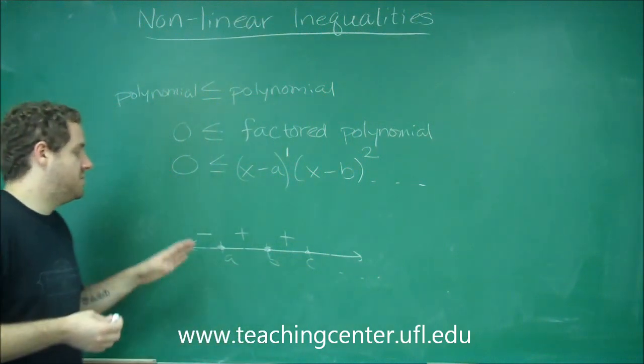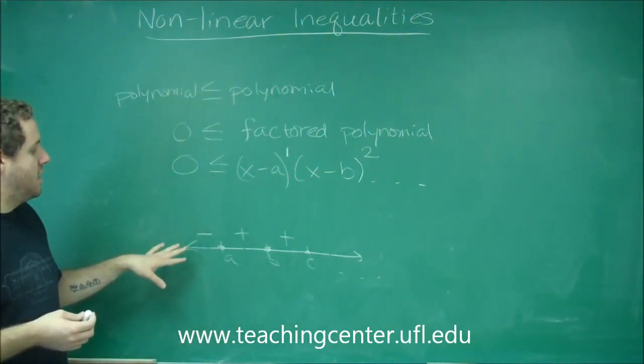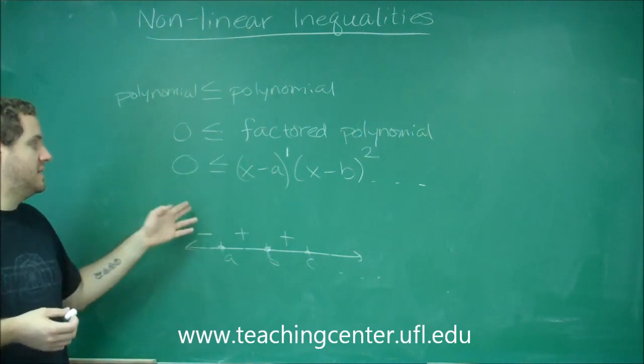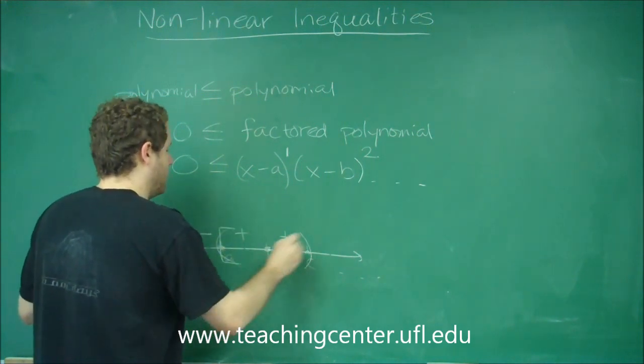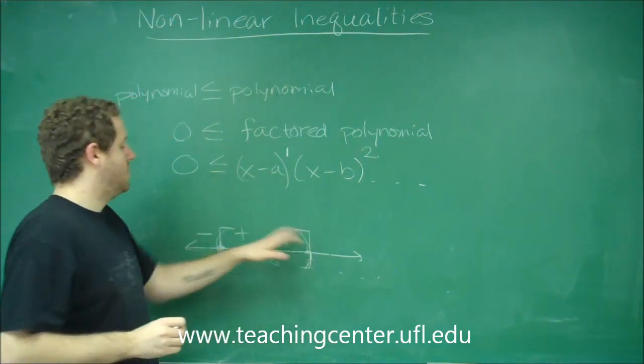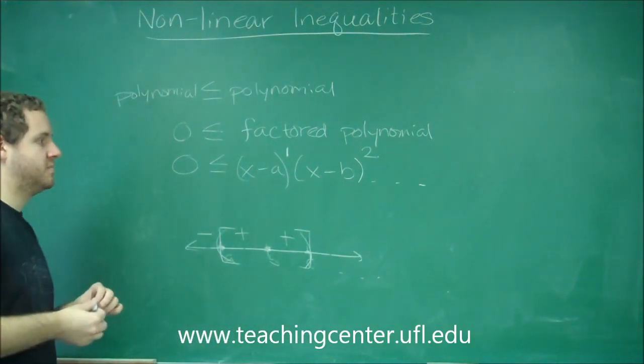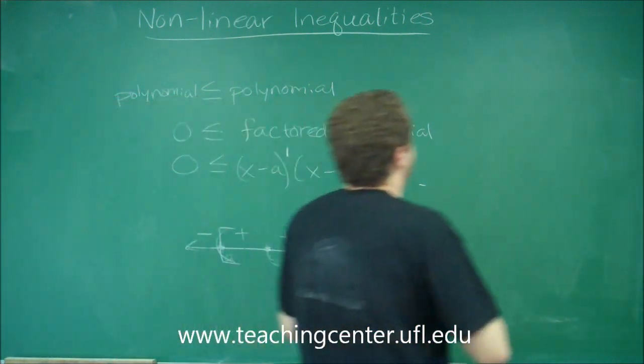And that's all you would have to do to figure out where the solution would be or not. And in this case, since we wanted greater than or equal to, all of these, this interval right here, for example, would work, because all these numbers are positive. So let's look at one where you'd have to use a rational function.